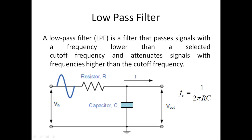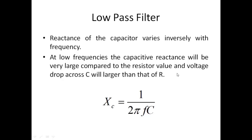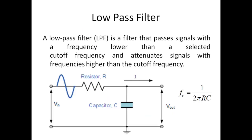This filtering process revolves around one very basic fundamental: the reactance of a capacitor varies inversely with frequency. The reactance of the capacitor is given by the formula Xc = 1 / (2πfc), where f is the frequency of the input signal. So the resistance that the capacitor offers to the input signal is inversely proportional to frequency — higher the frequency, lower the resistance offered; lower the frequency, higher the resistance offered.